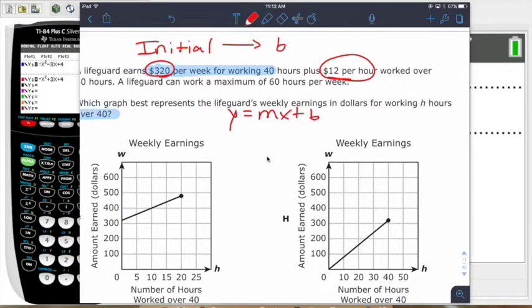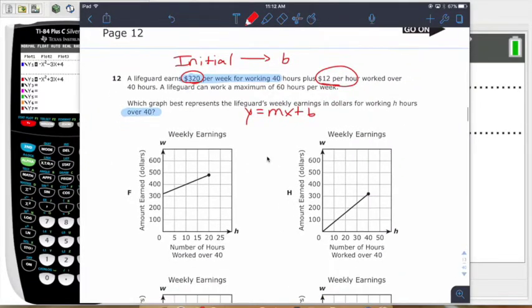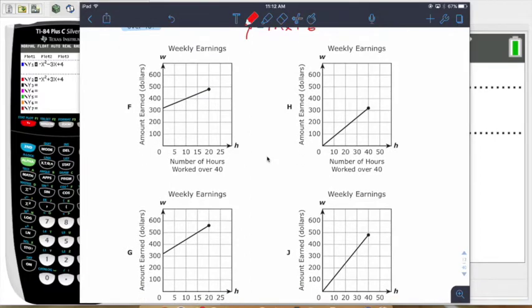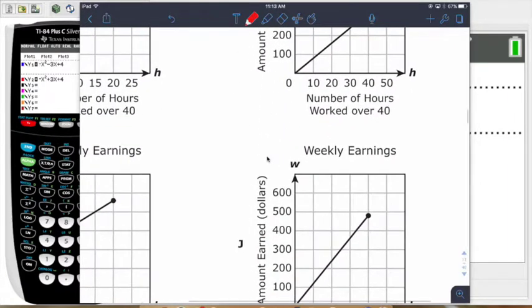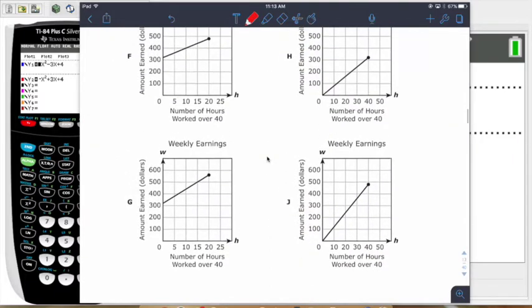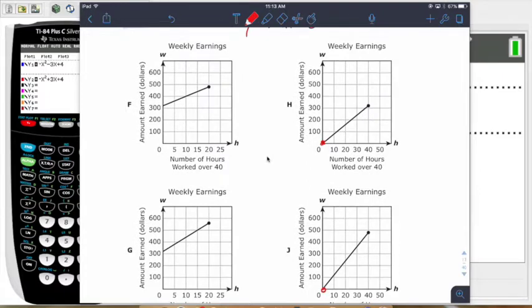So now we're going to take a look here at which of these graphs could match up. We're looking for ones that start at $320 because we're starting at like 41 hours, essentially. So both of these two options here on the right-hand side start at $0. Those options will not be good options.